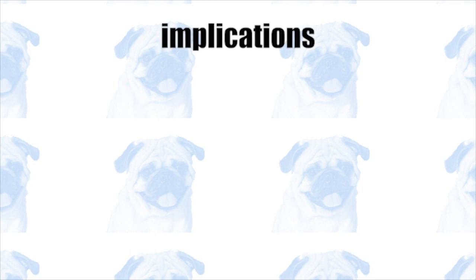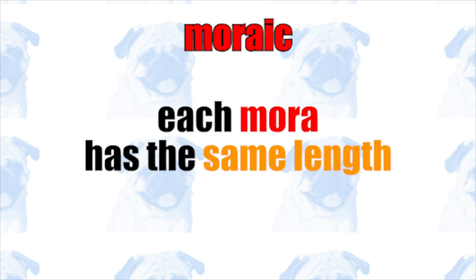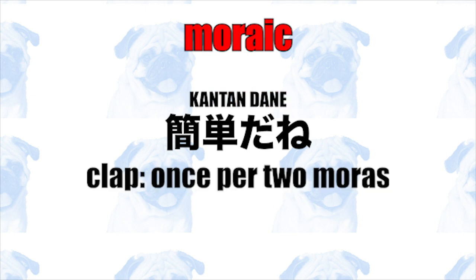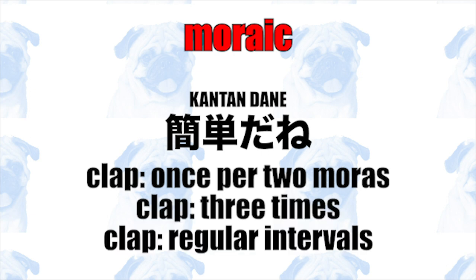This difference in the segmentation of sounds has implications on how each system creates and manages timing and rhythm in speech. In the moraic system, each mora has equal length. For example, the sentence "kan tanda ne" contains six moras: ka, n, ta, n, da, ne. If you clap once per two moras, then we clap three times in total, and we clap at regular intervals.